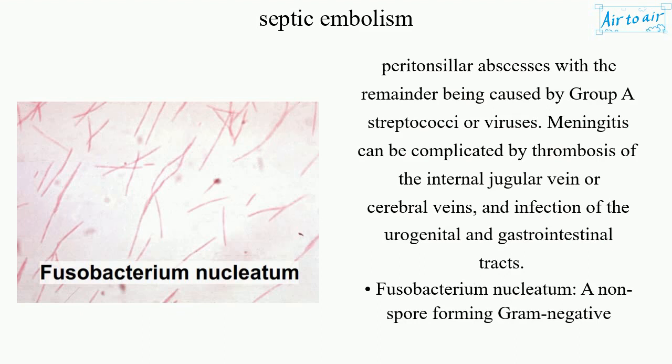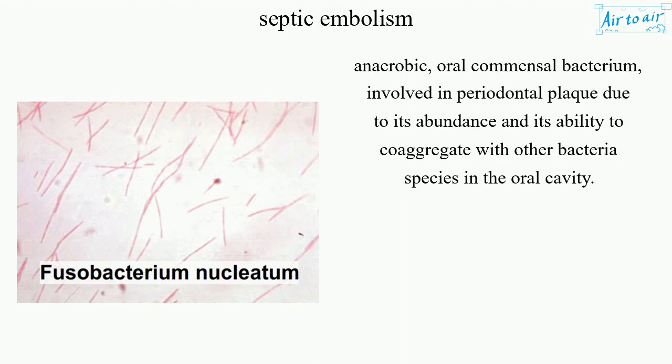Meningitis can be complicated by thrombosis of the internal jugular vein or cerebral veins, as well as infection of the urogenital and gastrointestinal tracts. Fusobacterium nucleatum, a non-spore forming gram-negative anaerobic oral commensal bacterium, is involved in periodontal plaque due to its abundance and its ability to co-aggregate with other bacterial species in the oral cavity.